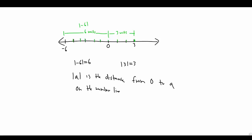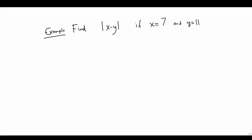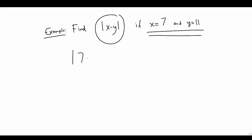That's why we can think of absolute value geometrically in terms of distance. Now let's evaluate an expression where x equals seven and y equals eleven. Substituting in, we get seven minus eleven, which is negative four. The absolute value of negative four is positive four — that's the final answer.